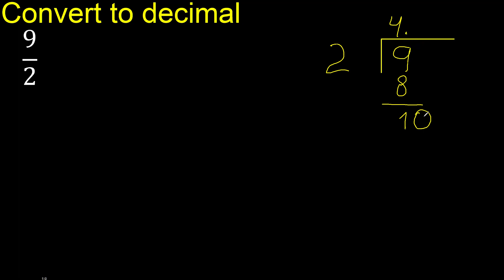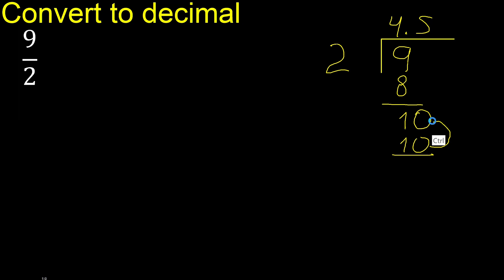Point only once: 10. Therefore 2 multiplied by 5 is 10. 10 is not greater than 10, therefore subtract 0. Finish.